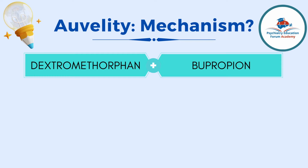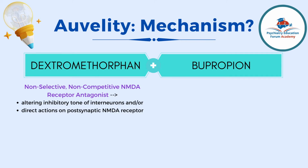The basic mechanism of dextromethorphan involves working on the glutamate pathway. Glutamate is one of the major excitatory neurotransmitters in the CNS. With depression, we need excitation — we need these excitatory neurotransmitters to go up. Ketamine is one of the medications that works on this pathway. Dextromethorphan is a non-selective, non-competitive NMDA receptor antagonist. There are so many theories about how medications that block NMDA receptors help with depression.